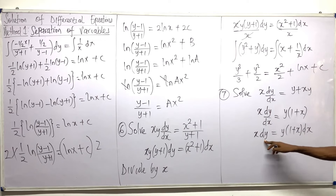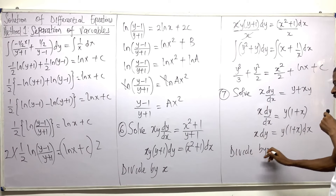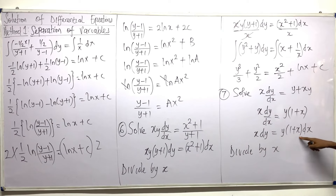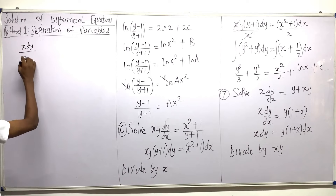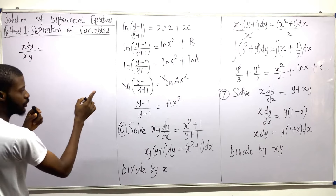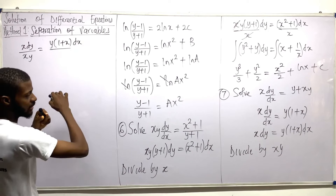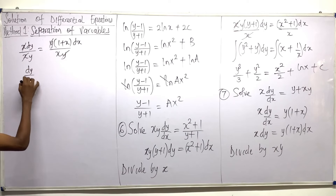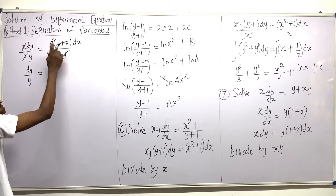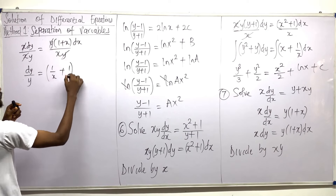The next thing I'm going to do is I need only y to be here, so this x has to go away. I have to divide by x. What else should I divide by? Looking at this side, what is not making x the only term here? Y. So I have to divide by xy. This is x divided by xy equal to y into 1 plus x dx divided by xy. So x becomes not xy. What's left: y divided by y equals — this is 1 over x, 1 over x plus x over x is 1, and then dx.